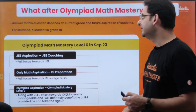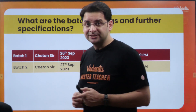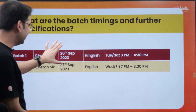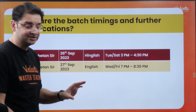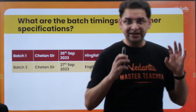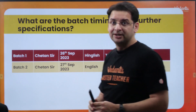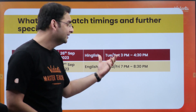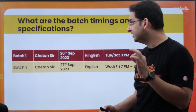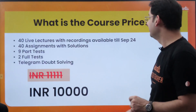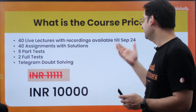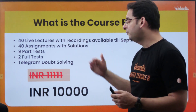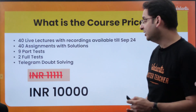Now what are the batch timings? We are launching two batches for Level 6. Both batches start from September — 26th and 27th — and will be taken by Chetan Sir. The first batch is Hinglish (Hindi plus English), Tuesday and Saturday from 3:00 to 4:30 PM. The second batch is English only, Wednesday and Friday from 7:00 to 8:30 PM. The course consists of 40 live lectures with recordings available till September 2024, 40 assignments with solutions, 9 part tests, 2 full tests, Telegram doubt solving, and the price is 10,000 rupees after applying the coupon code.